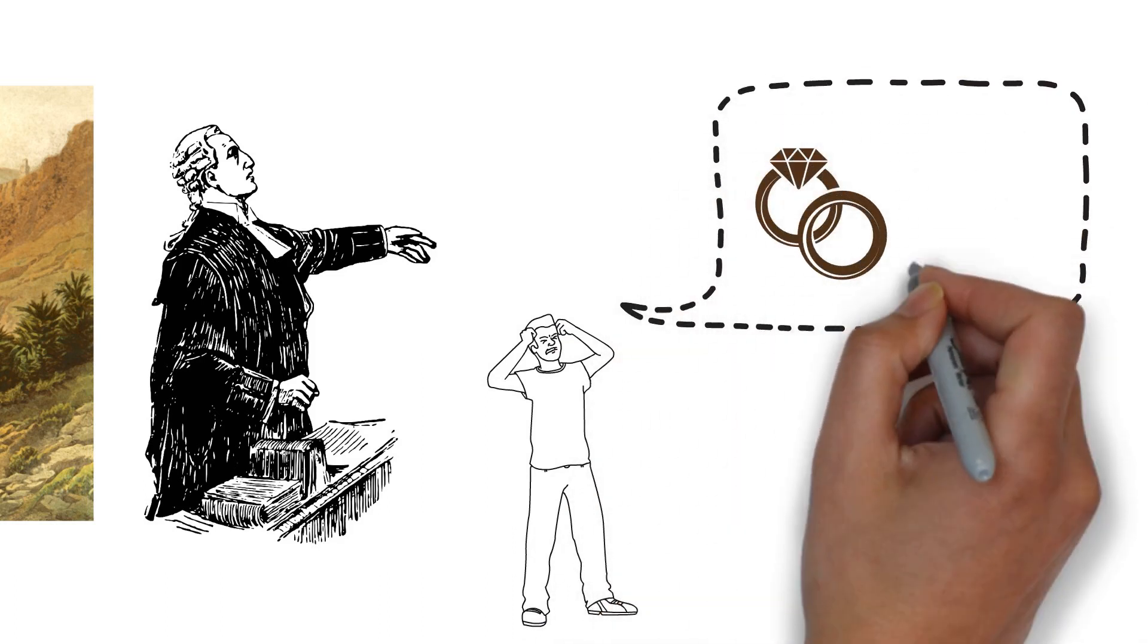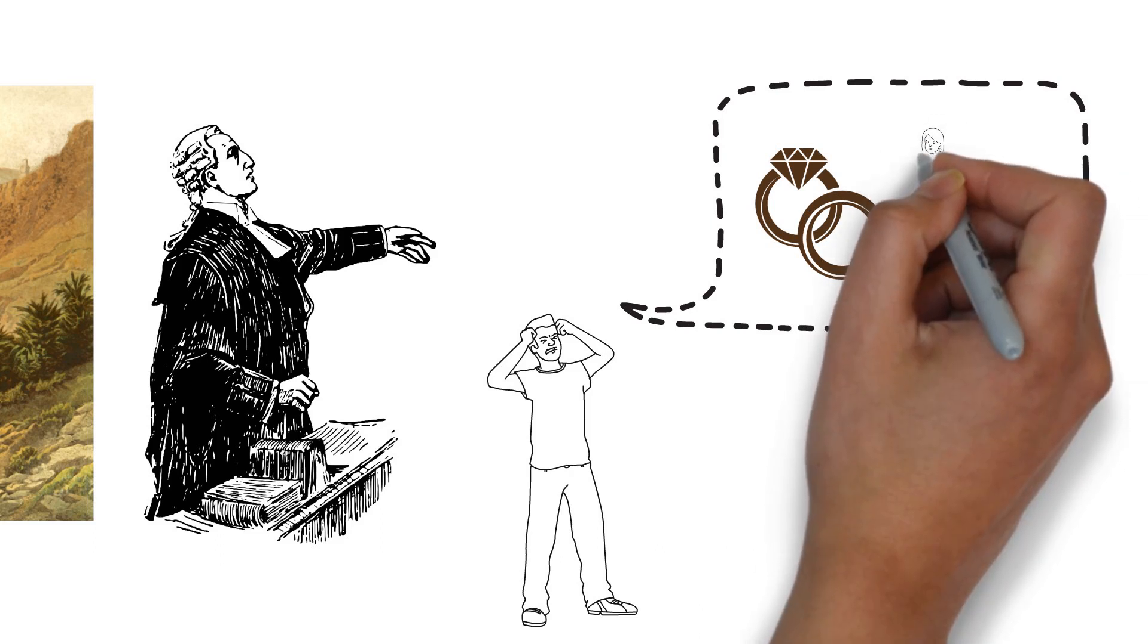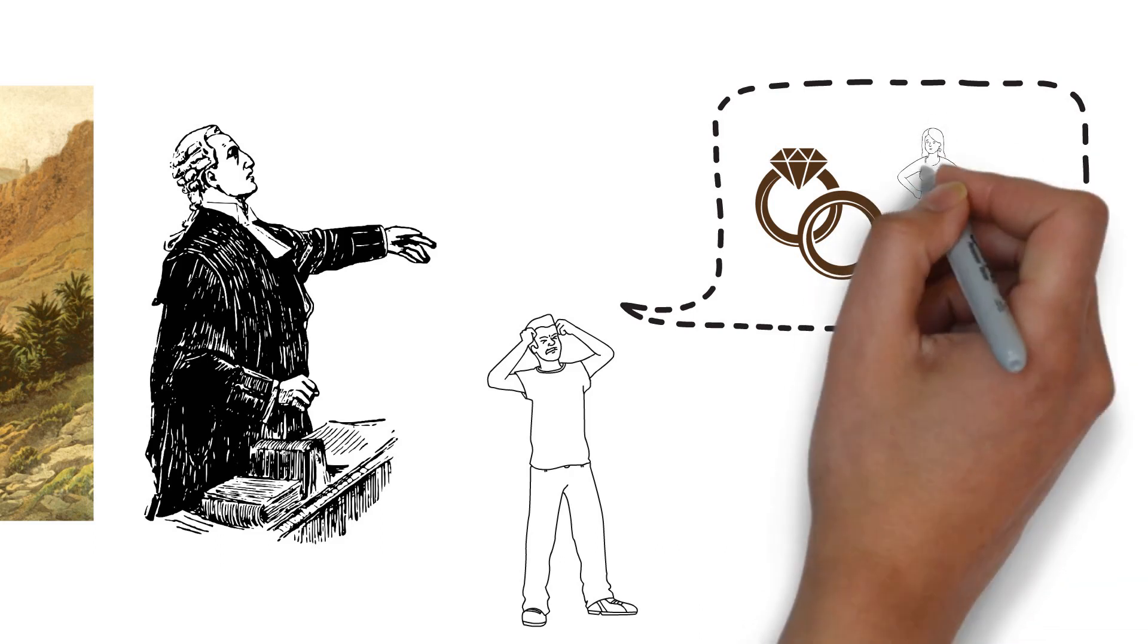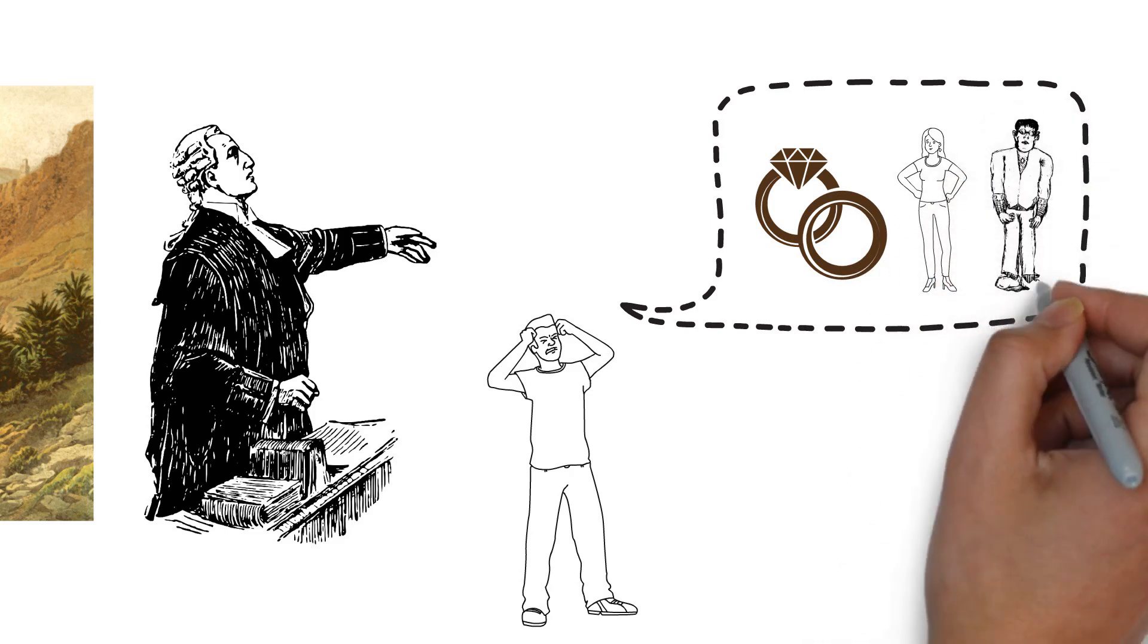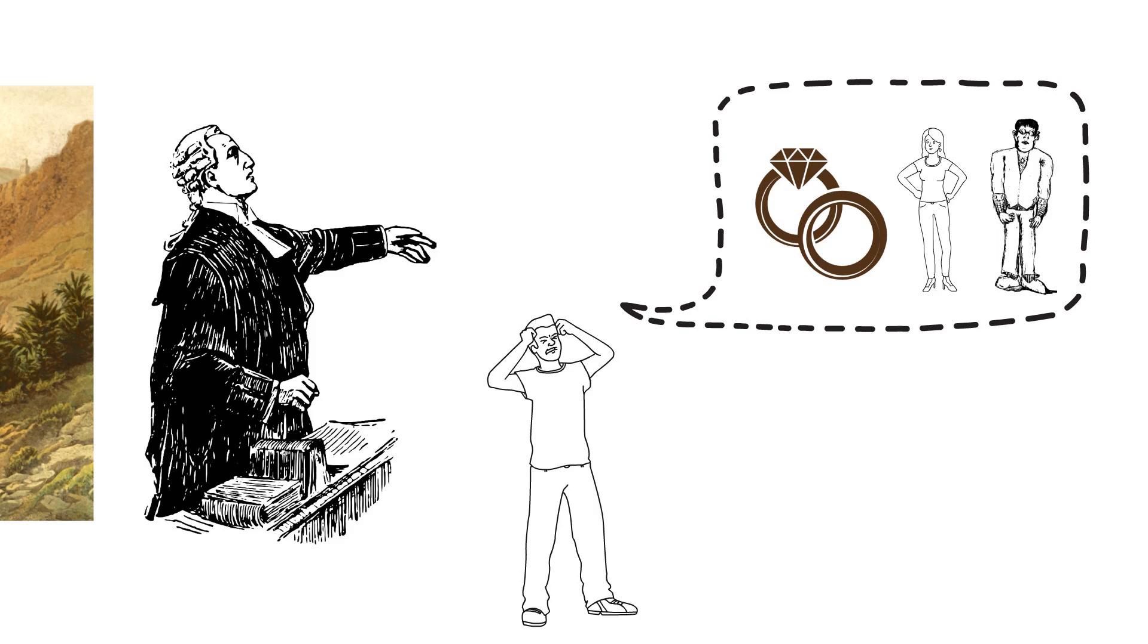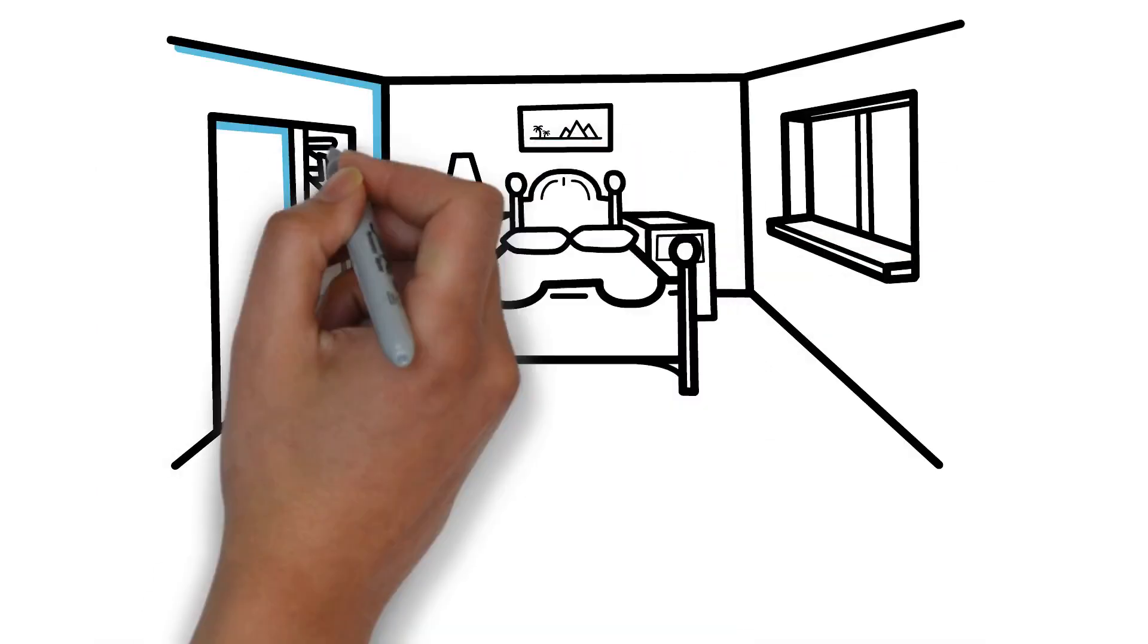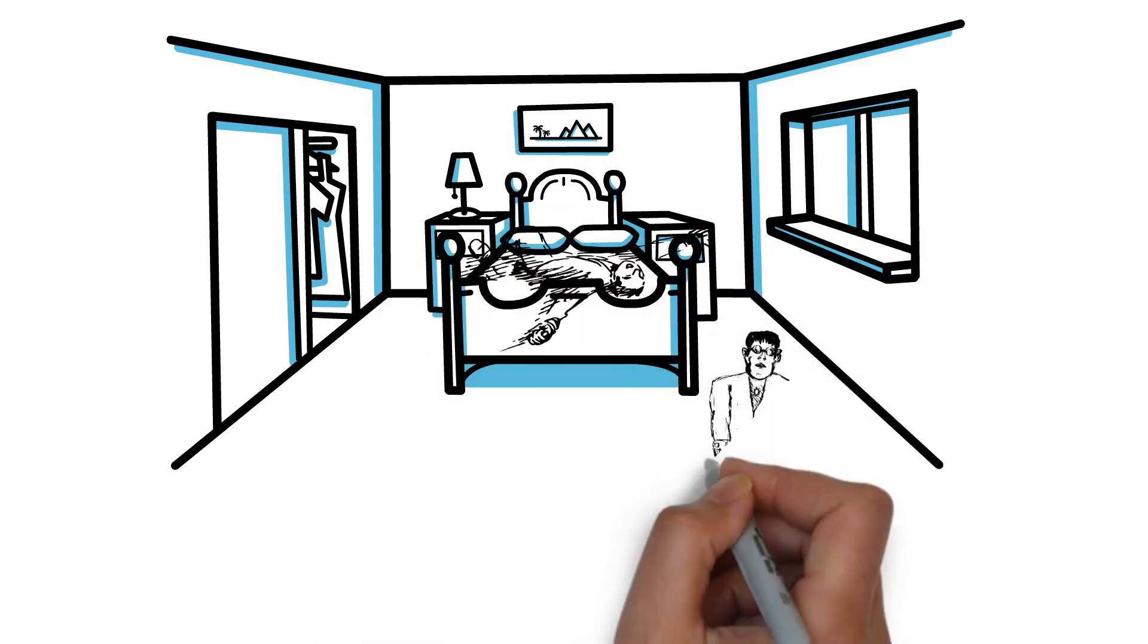With a wedding date set, Victor torments himself with the thought of the monster's threat to be with him on his wedding night. The wedding goes off as planned. While Victor makes sure he covers all possible entrances that the monster could use to get into the wedding chamber, the monster gets into Elizabeth's room and strangles her.